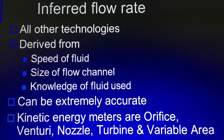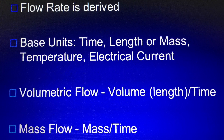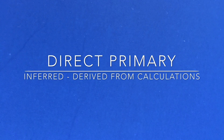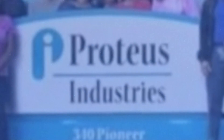These inferred flow rates can be extremely accurate. You have learned that flow rate is derived from the base units of measurement. Volumetric flow rate is volume, which is three lengths, divided by time. Mass per time is mass flow rate. You have also learned that flow rate can be measured directly with primary base units or inferred from calculations of other things like fluid speed and flow channel size.